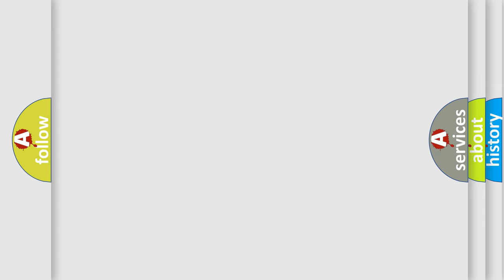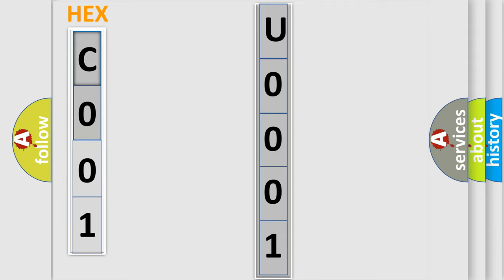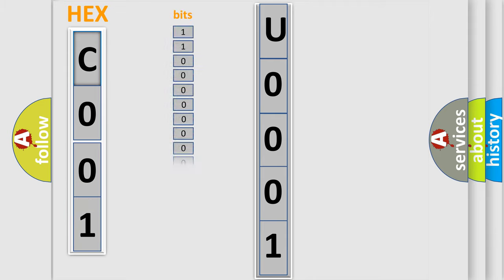The following demonstration will help you look into the world of software for car control units. The error code is split into two bytes consisting of 16 bits. One bit is the basic unit that each computer works with.